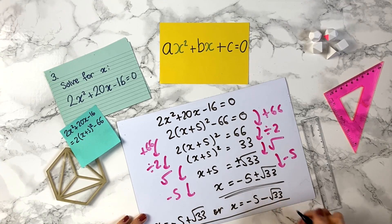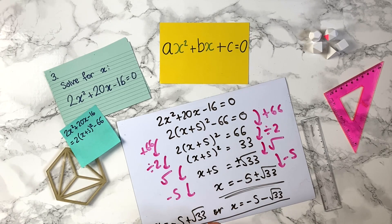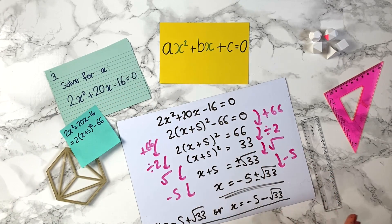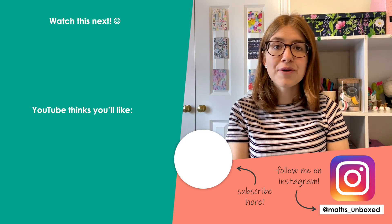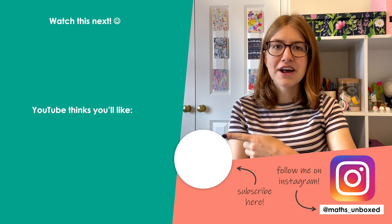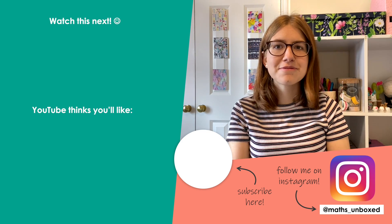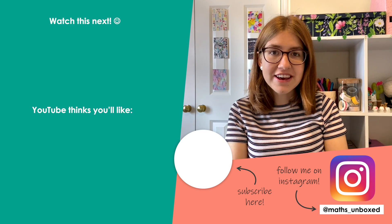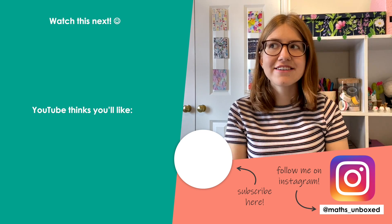That will also get you full marks. You can put these in a calculator if you want decimal places, or substitute back into the original equation to confirm it equals 0 and check you've got it correct. So there you go — that's how you solve quadratic equations by completing the square. Thanks for watching! Check out my channel and subscribe if you'd like to see more videos.